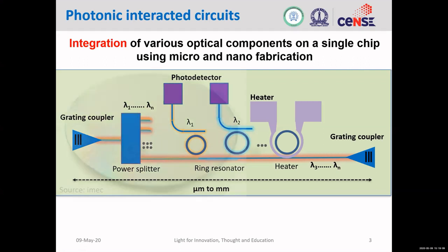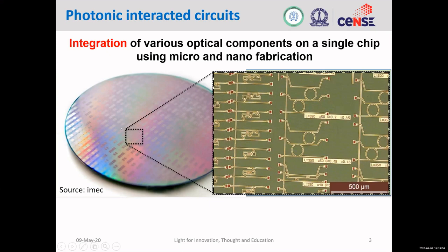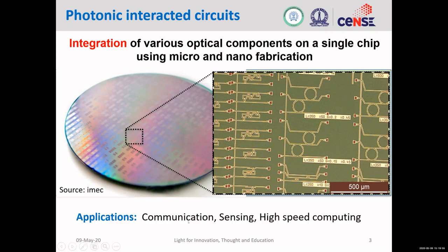Another advantage of photonic integrated circuits is that they can be made at wafer scale. Here is an example of a photonic integrated circuit on a wafer — this means you can make multiple copies and there is a possibility of mass fabrication, printing many different devices on a single wafer. Here I'm showing a zoomed view of different waveguide configurations that can be printed using the same technology as IC fabrication — electronic circuit fabrication. The applications are endless, with the most common being communication, sensing, and high-speed computing.